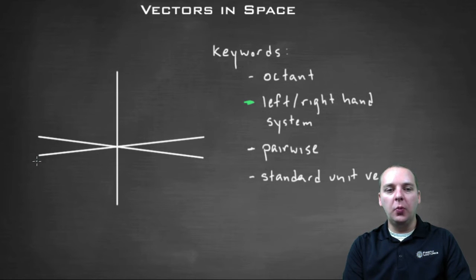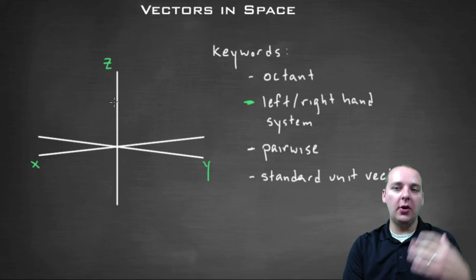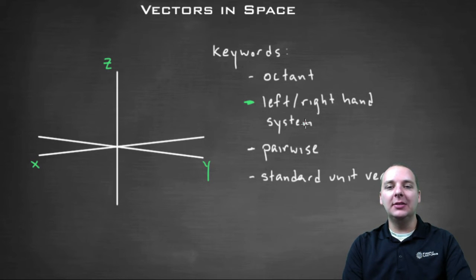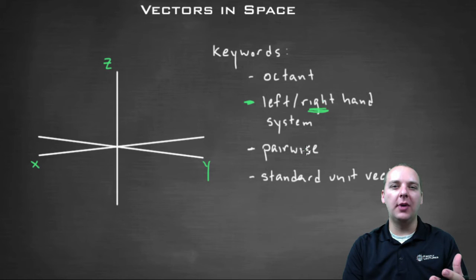A lot of people will call this the x-axis, they'll call this the y-axis, and they'll call this the z-axis. This is the way I do it, and in all the upcoming videos it will be done this way. This is called a right-hand system. Now let me explain why this is called a right-hand system.